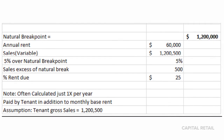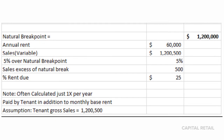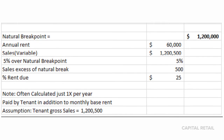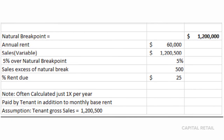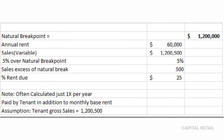And there you have it — 5% of the natural breakpoint of $1.2 million. The overage is $500, and therefore the only additional rent is $25.